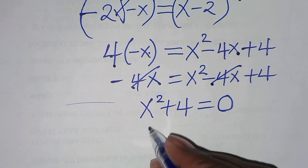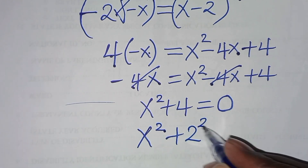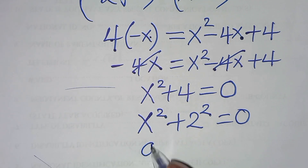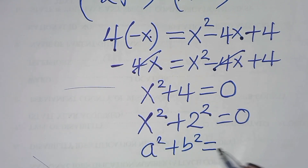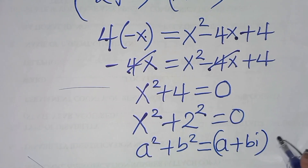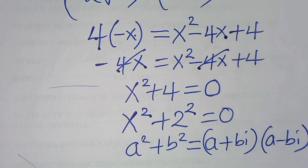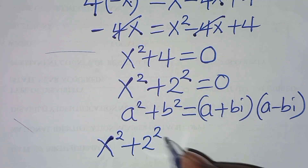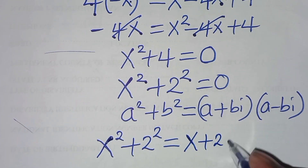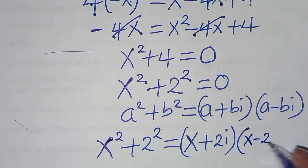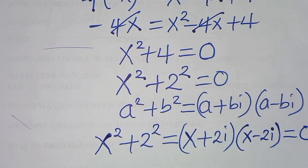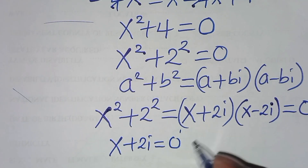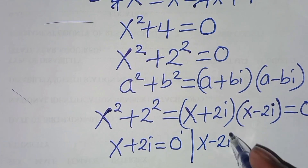We can write this as x squared plus 2 to the power 2 equals 0, expressing 4 as 2 squared. Now x squared plus 2 squared is in the form a squared plus b squared, which we can express using complex factors as (x plus 2i)(x minus 2i) equals 0. This gives us two parts: x plus 2i equals 0, and x minus 2i equals 0.